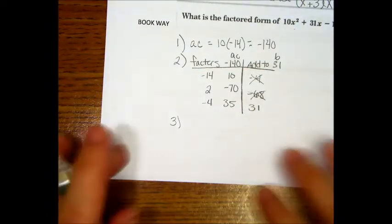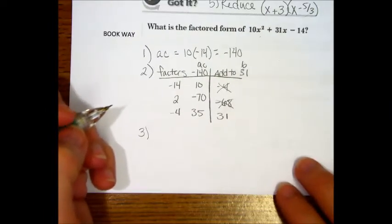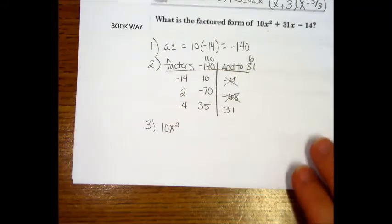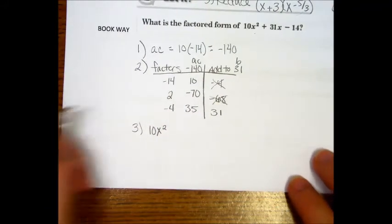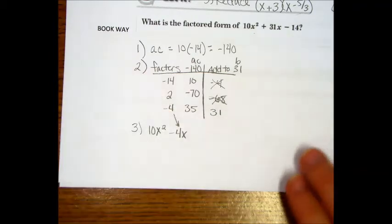Step three. What's step three? We are going to take the A. That is right. Which is 10x squared. Good. The A term.